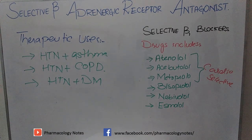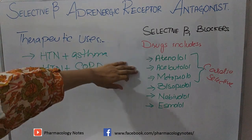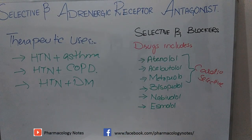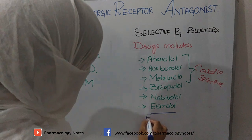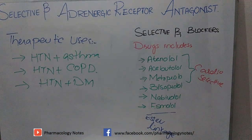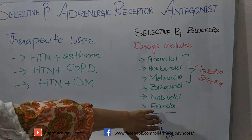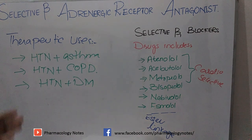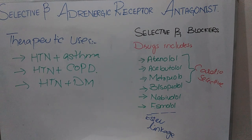In summary, beta-1 selective receptor blockers include atenolol, acebutolol, metoprolol, bisoprolol, nebivolol, and esmolol. Among these, esmolol has an acetyl linkage and cannot be given orally because it is degraded by stomach and phosphorus factors. Esmolol is always given intravenously. Atenolol, acebutolol, and metoprolol are all used in hypertension, asthma, and COPD cases where propranolol cannot be used. Thank you.